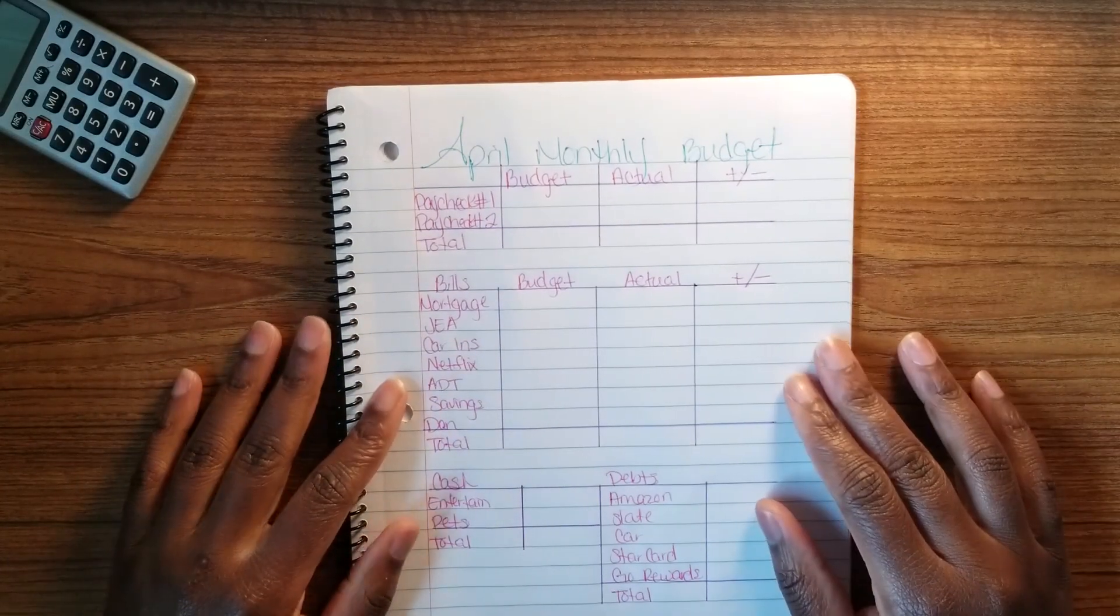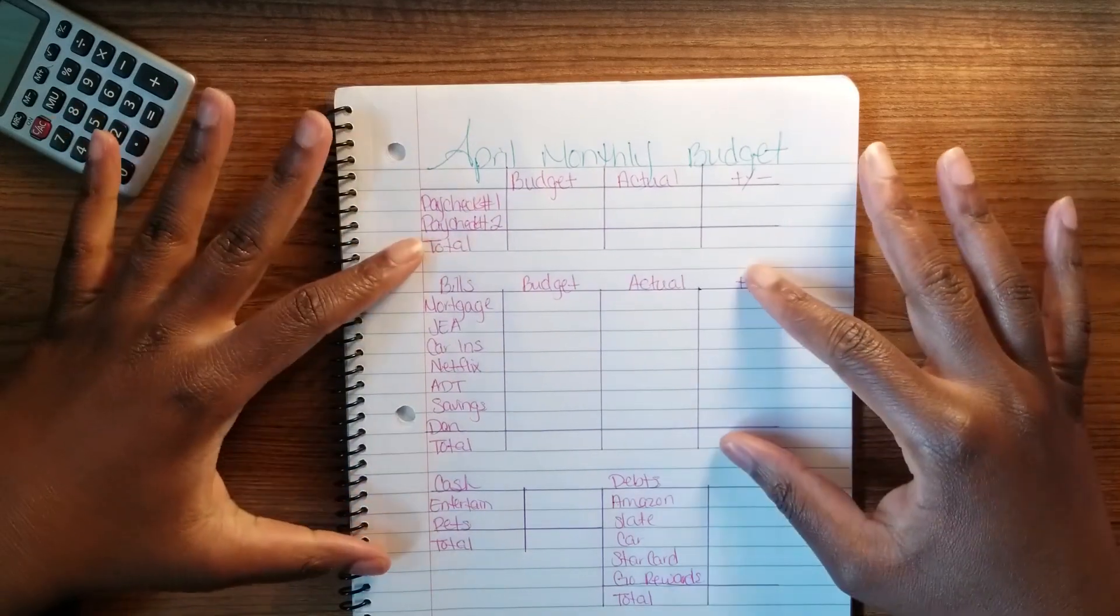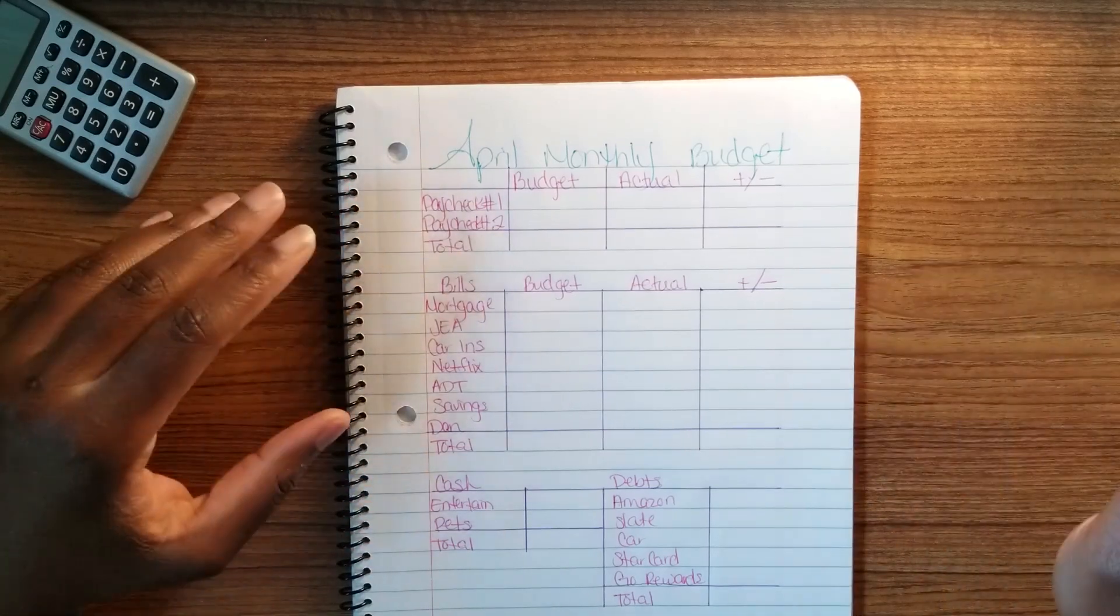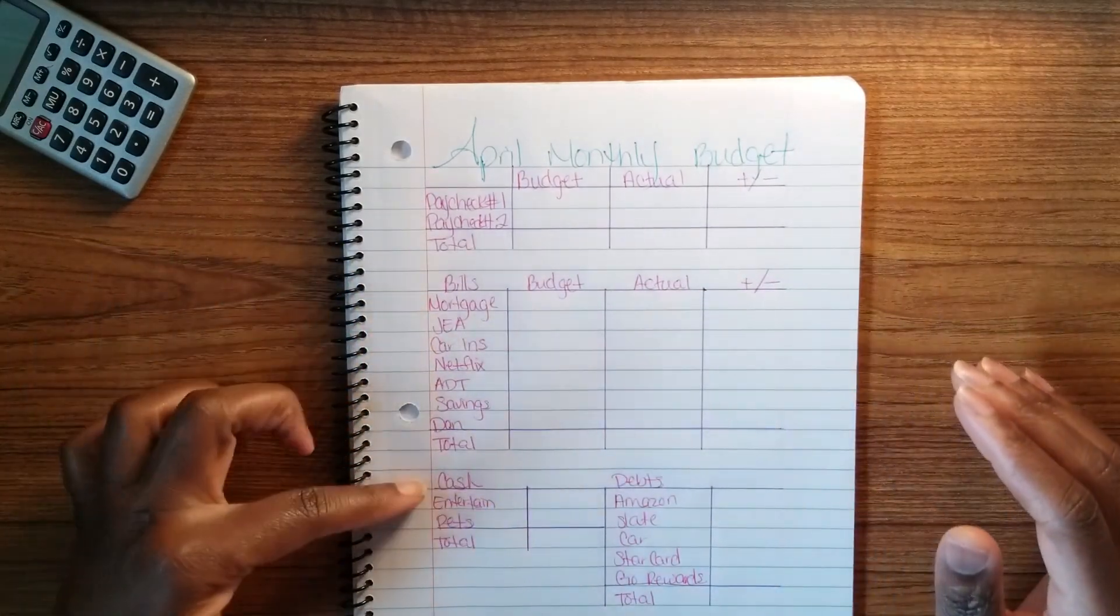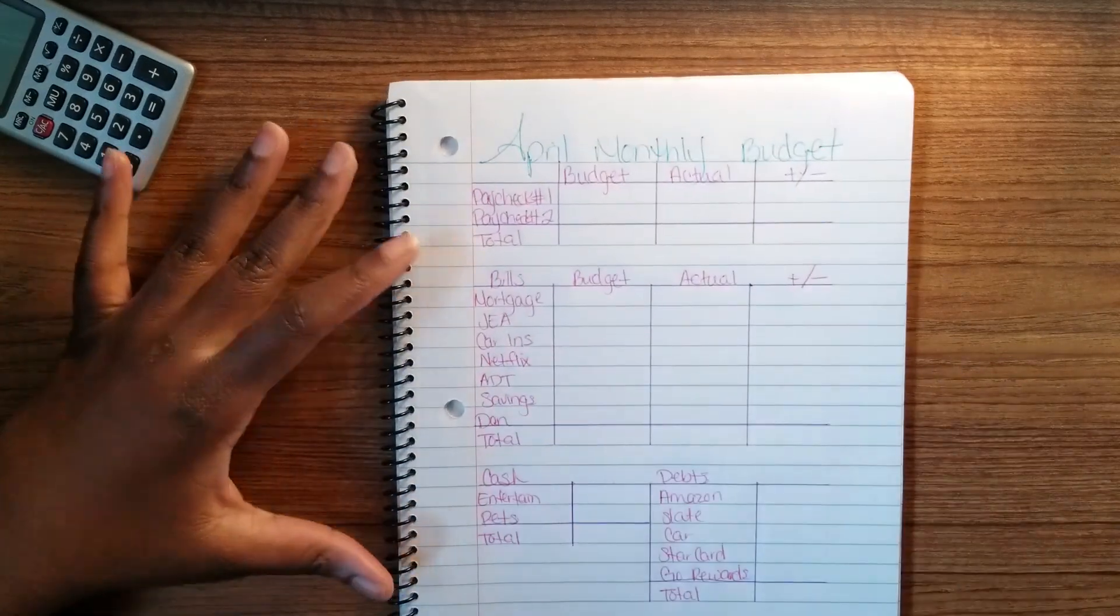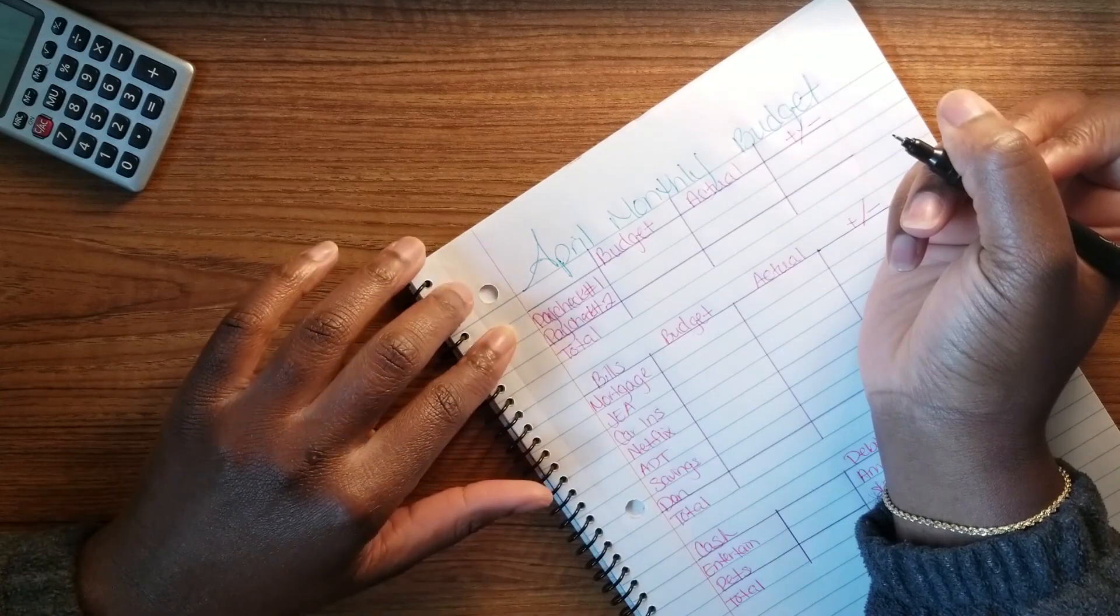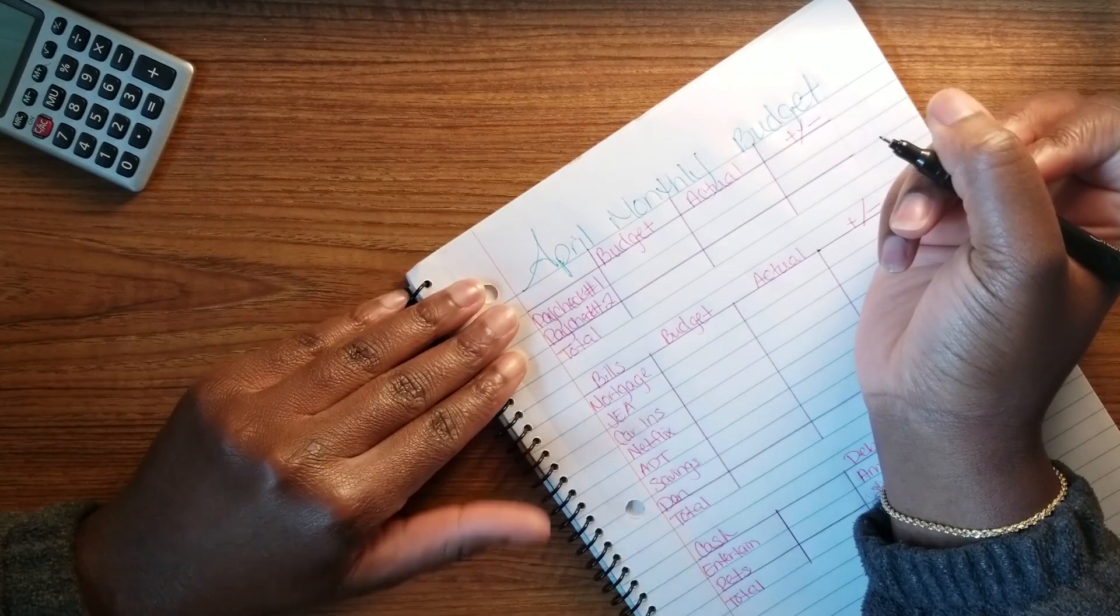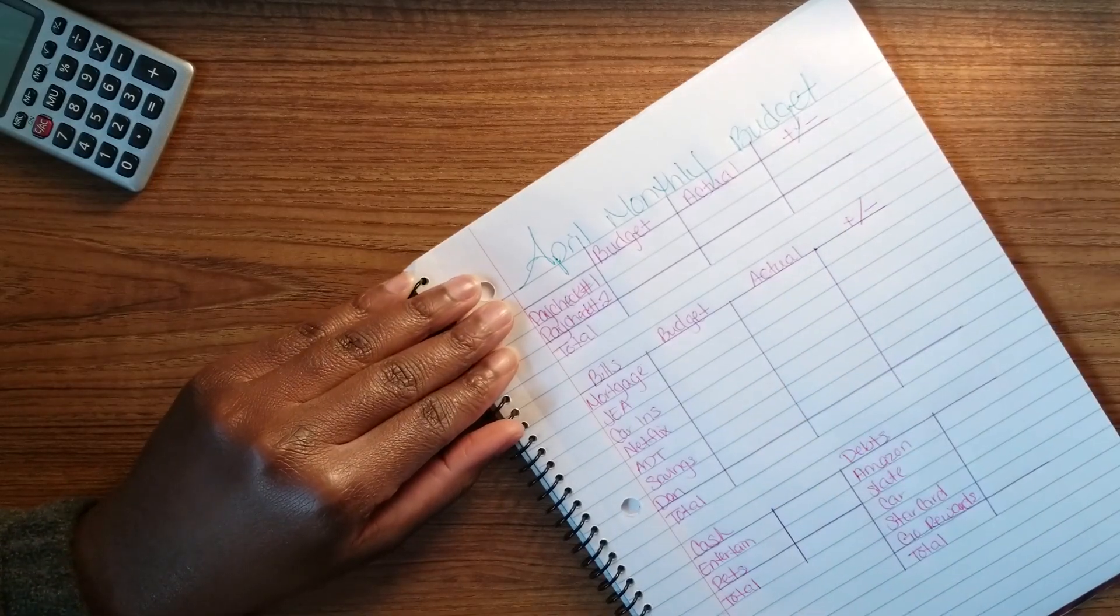Some of you guys may have figured out by now by looking at my other videos that I am military and I'm currently deployed overseas. With that being said, my budget is literally half of what it would normally be if I was at home because I cut a lot of stuff off or I suspended a lot of things. My cash envelope section would probably have like eight more different things listed here.